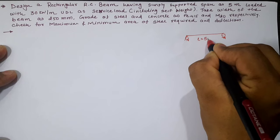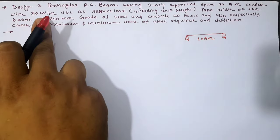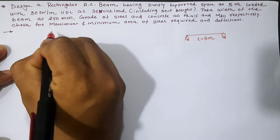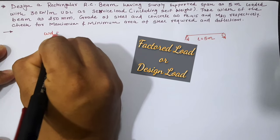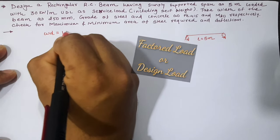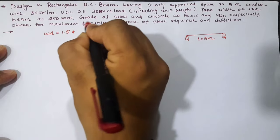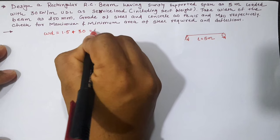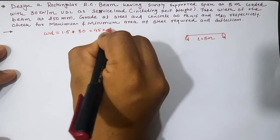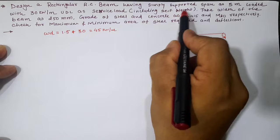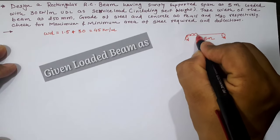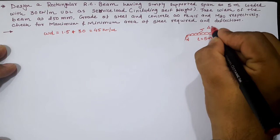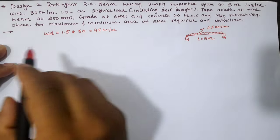The beam is loaded with 30 kN/m UDL as service load, which means we have given the working load. Hence, the design load is equal to factor of safety multiplied by service load, 1.5 times 30, which equals 45 kN/m including self-weight of the beam.